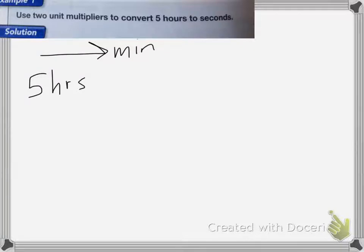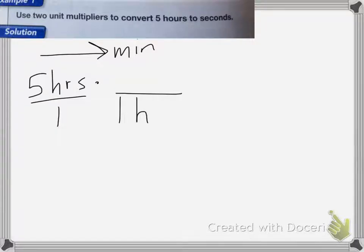The unit multiplier I'm going to use has to be 60 minutes and one hour. Since I need to cancel hours, the one hour is going to be on the bottom and the 60 minutes on the top. Because 60 minutes over one hour is equal to one — they're the same.